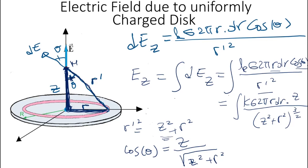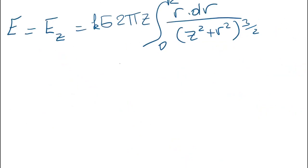Now we need to find the integral limits. The variable r goes from the origin to the outer edge of the disk, i.e., from 0 to R (the radius of the disk). Substituting everything, the electric field E_z equals k sigma 2π z times the integral from 0 to R of r dR over (z squared plus r squared) to the power 3/2.